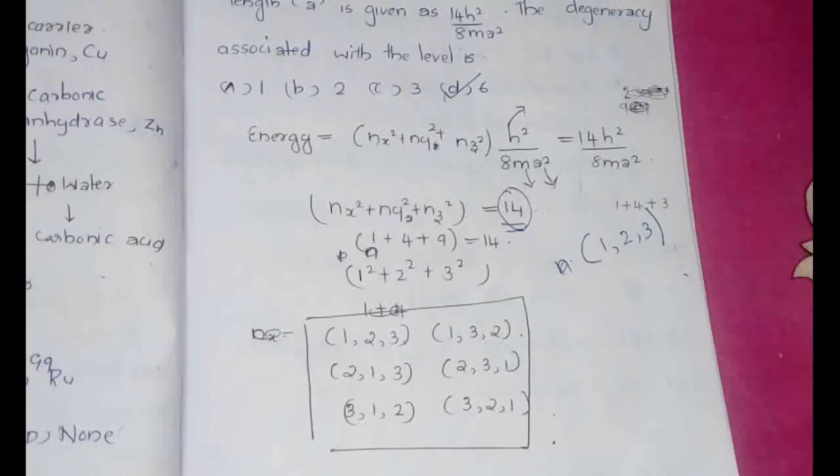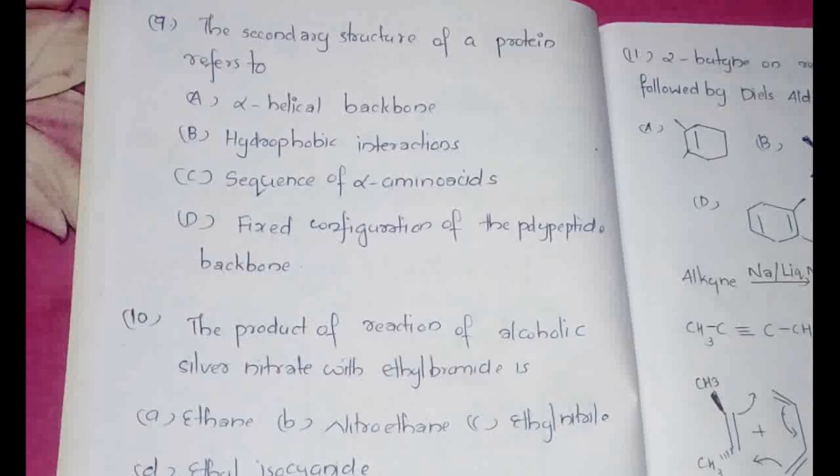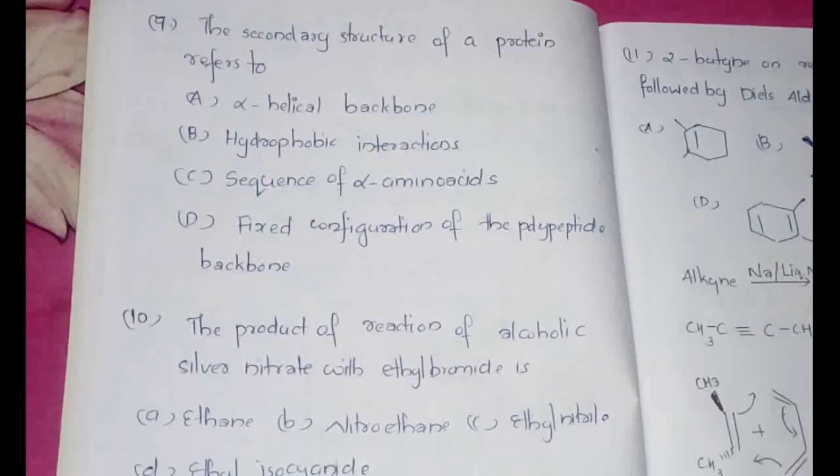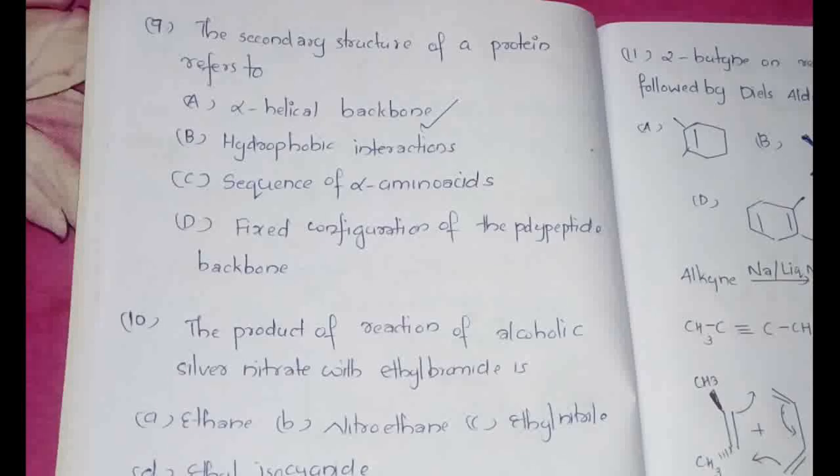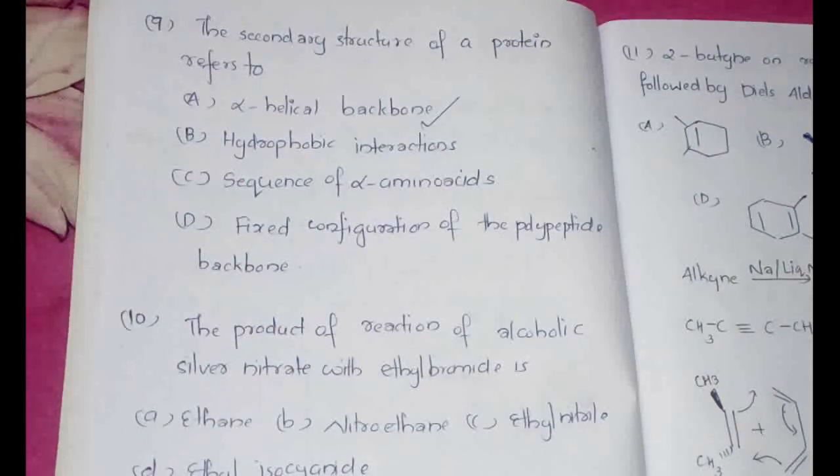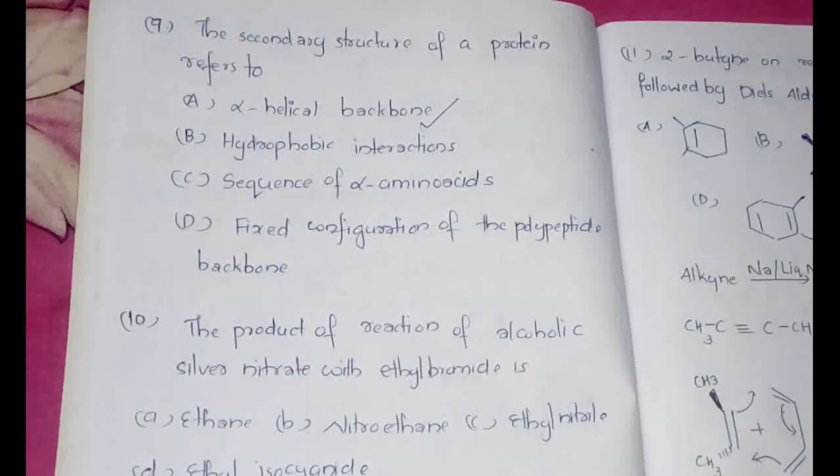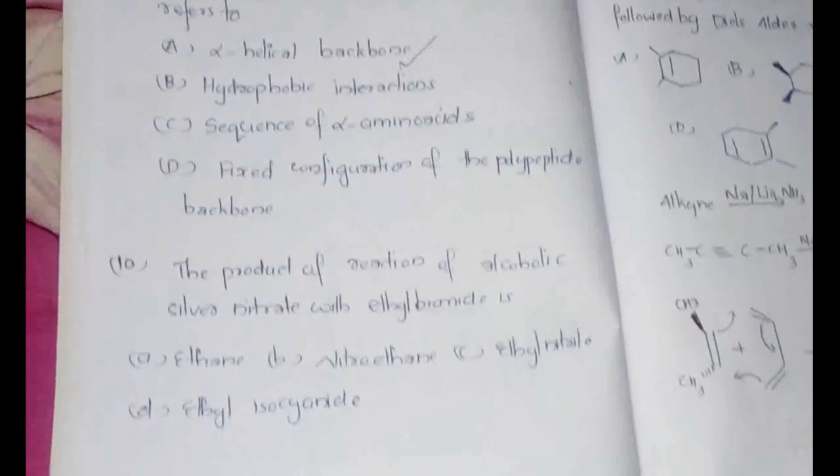The next question: the structure, secondary structure of a protein refers to. This is a very simple question but yet I have seen people making mistakes in this part. It is alpha helical structure. So alpha helix and beta sheets are the secondary structures of a protein. The primary structure will be actually the sequence of alpha amino acid. And we will be having a tertiary structure as well as a quaternary structure, or the real protein. That is when a lot of alpha helixes and beta sheets come together it forms a tertiary structure of the protein and so on. So that is the answer for this particular question.